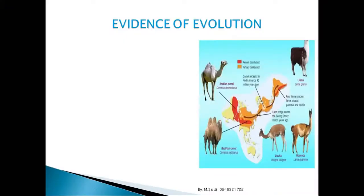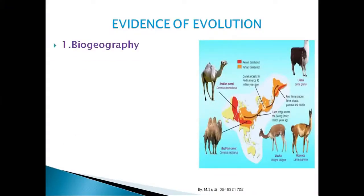The first evidence of evolution is biogeography. 'Bio' means life and 'geography' means distribution in different locations, so biogeography refers to how life has been distributed across different locations.